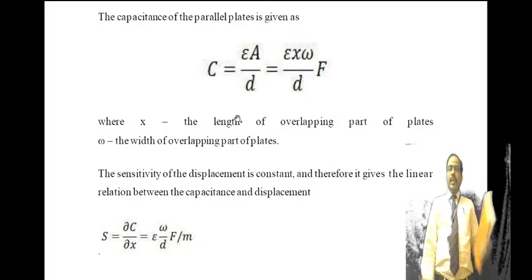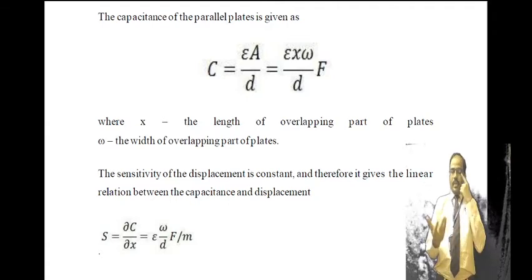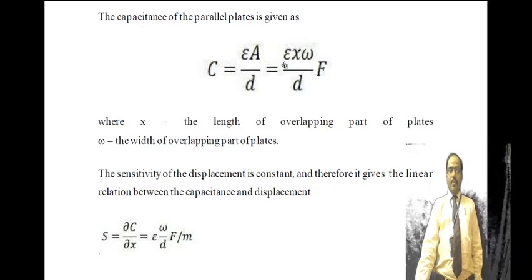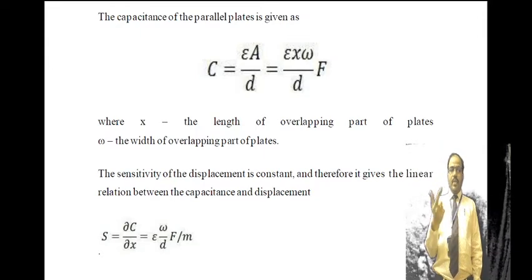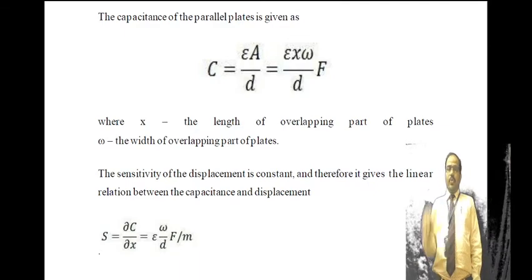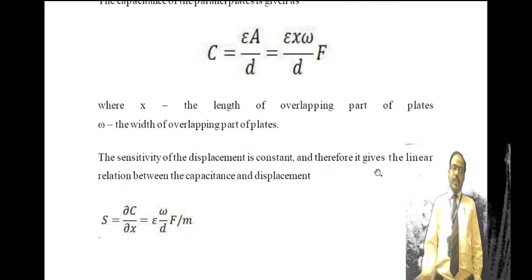The sensitivity of this capacitor type — whose capacitance changes due to change in overlapping area — is dC/dx = εw/d, which is constant. Since sensitivity is constant, this type of transducer produces a linear variation of capacitance with respect to displacement. Plotting displacement against capacitance gives a perfectly linear graph.